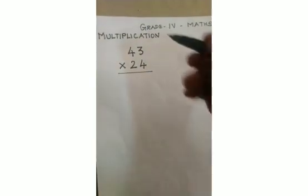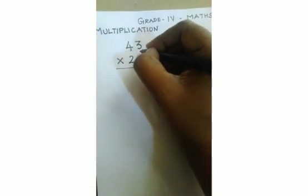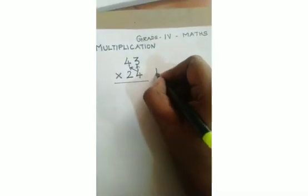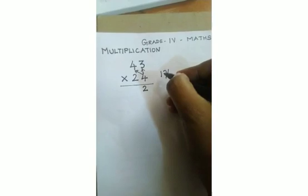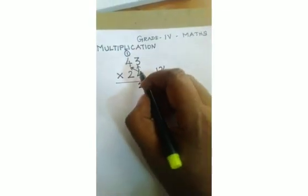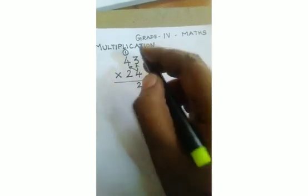We are going to multiply 43 into 24. First you take 4, which is in the ones place, so you multiply 4 with 3 and then you multiply with 4. So 4 threes are 12. In that 12, you write 2 alone in the ones place and 1 carry to here. Then you multiply 4 with 4. 4 fours are 16, 16 plus 1 is 17.